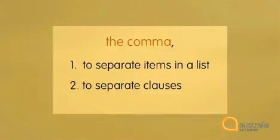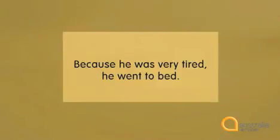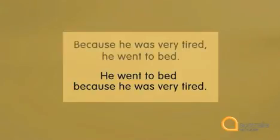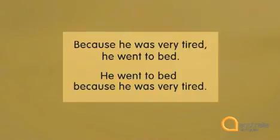A second use of commas is to separate clauses in a sentence. We use a comma to separate dependent and independent clauses, but only when the dependent clause is first in the sentence. Here's an example: 'Because he was very tired,' — a dependent clause — followed by 'he went to bed' — an independent clause. Notice that we use a comma: 'Because he was very tired, he went to bed.' But if we swap the clauses around — 'He went to bed because he was very tired' — with the independent clause first, we don't need a comma. You can hear the difference: there's a pause in the first version, but no pause in the second. Sometimes when you're writing, if there's a pause, you might need a comma.